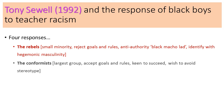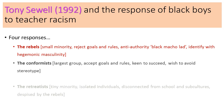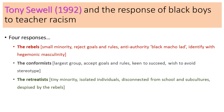The second group, the conformists, were the largest group. These boys accepted the goals of education - trying to get qualifications - accepted the rules, were keen to succeed, and really wished to avoid the stereotype of the black male underachiever. The third group, the retreatists, were a very tiny minority - isolated individuals disconnected from school and from subcultures, neither rebels nor conformists, and particularly despised by the rebels.